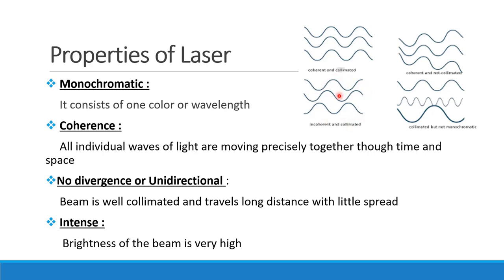So a beam can be coherent or incoherent. For monochromatic comparison: if this beam has three waves with three different frequencies and three different wavelengths, then it is not monochromatic.